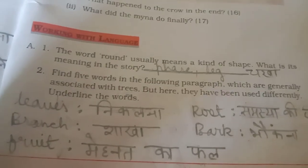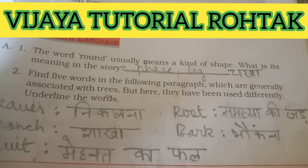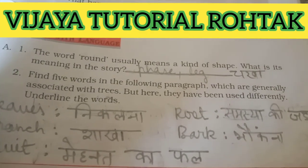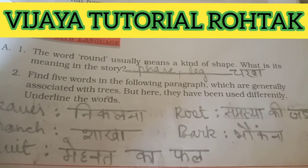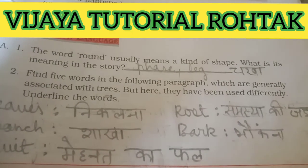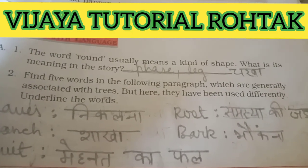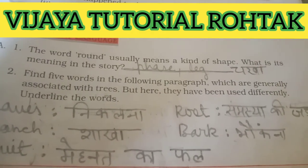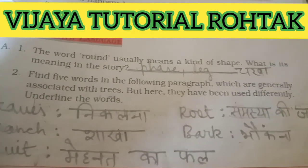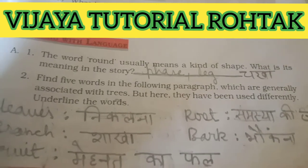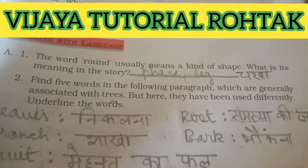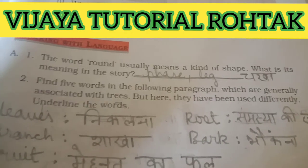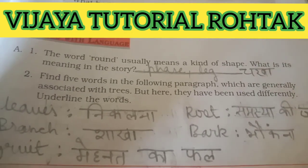Now this is 'Working with Language.' We have a word called 'round' — actually 'round' means a shape, like square or rectangle. But in our chapter, 'round' means 'phase' or 'leg' — meaning 'charan.' So the first charan is writing our name, and the second charan is doing our publicity. Here 'charan' means phase or leg.